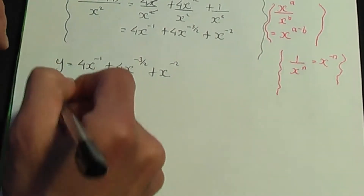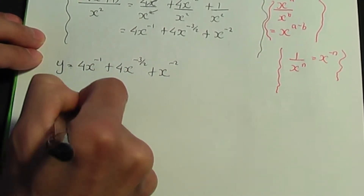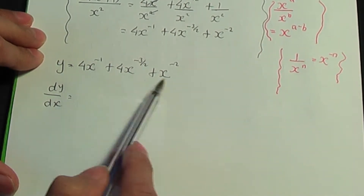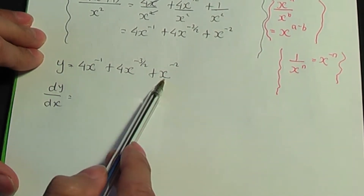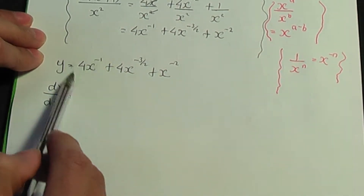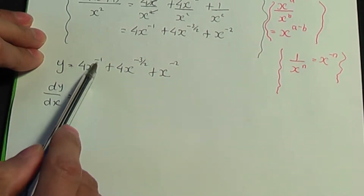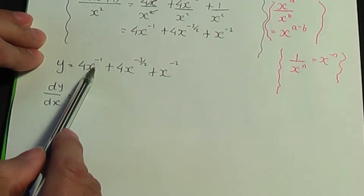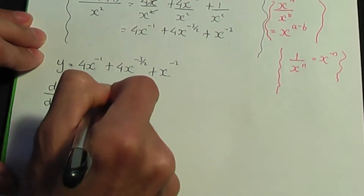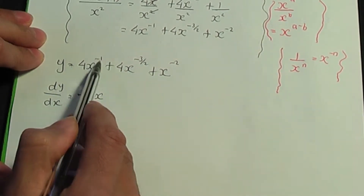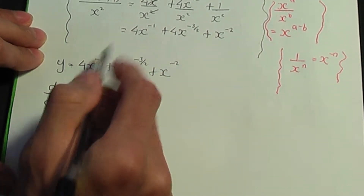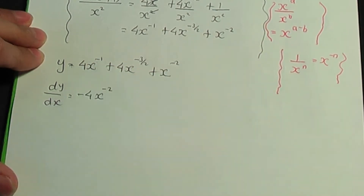Now we're in a position to work out the gradient function. dy/dx — since we have a sum of terms, we can differentiate each term separately. For the first term, multiply by the power: minus 1 times 4 is minus 4. Subtract 1 from the power: minus 1 minus 1 is minus 2.